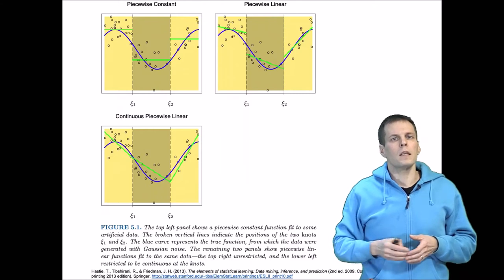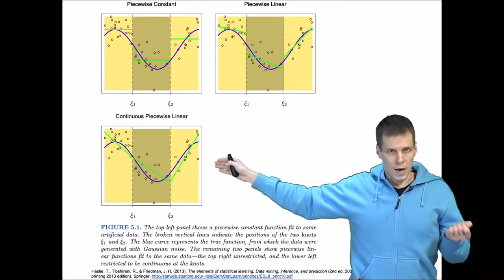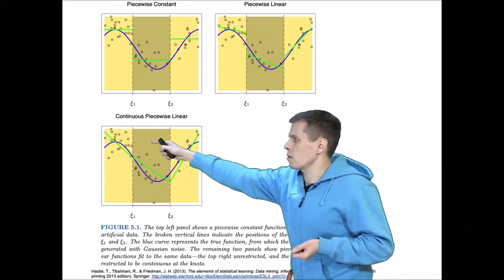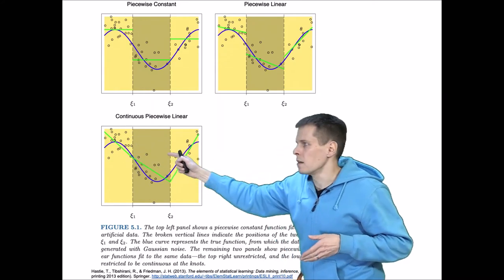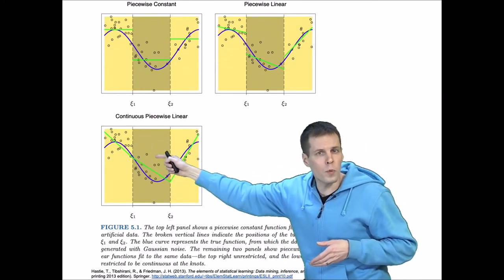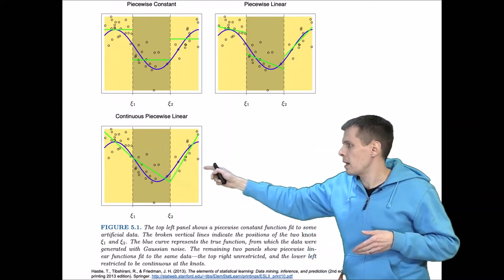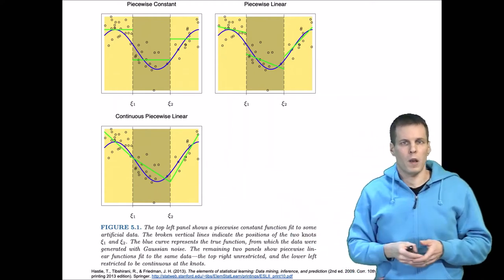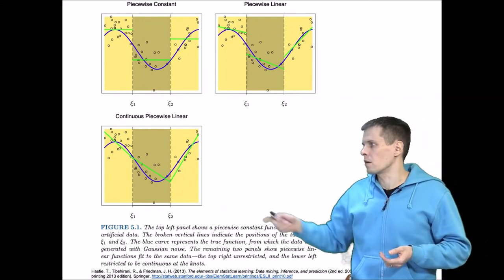We're basically here estimating four different parameters. So we have the intercept which shows where this first spline crosses the y-axis. Then we have the first slope. Then we have the difference between the first slope and the second slope and the difference between the second slope and the third slope which gives us the line. So we need four parameters to show how that line goes.